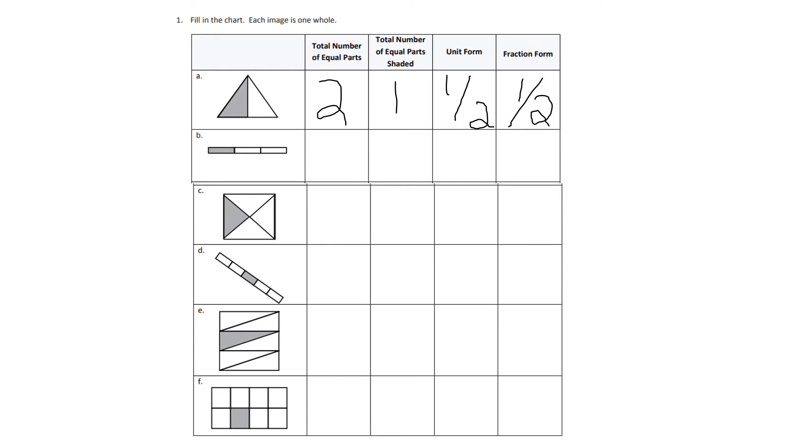So number one says, fill in the chart. Each image is one whole. So I'm doing, I did A. So there's two total number of equal parts. There's one total number of equal shaded parts. The unit form is one half, because remember, a unit form is, the top number is always a one, and the denominator is always the total amount of equal parts. So for this one, it's two. And remember, when I'm saying the top part is always a one, we know that is the numerator. So then I wrote one half, and the fractional form is also one half.